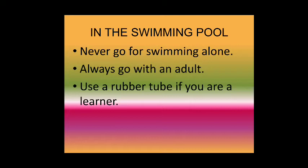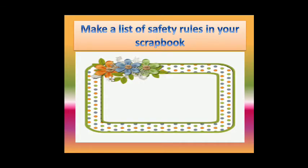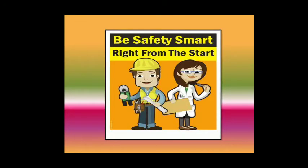So students, we should always follow the safety rules at home, at school, on the playground, on the road, and in the swimming pool. If we don't follow these safety rules, we might get hurt. Now students, it's your turn — make a list of safety rules in your scrapbook. Today we learned about the definition of safety and safety rules at home, on the road, at school, in the playground, and in the swimming pool. Always remember: be safety smart right from the start!